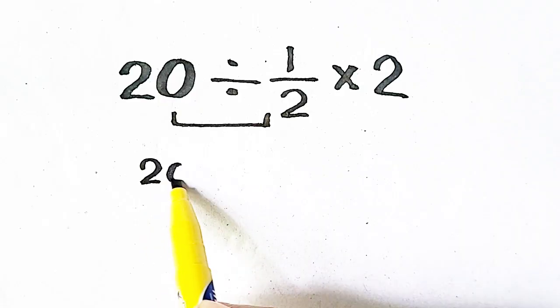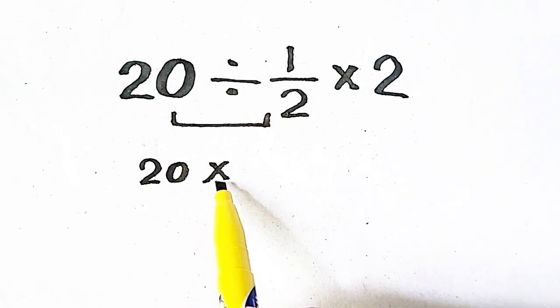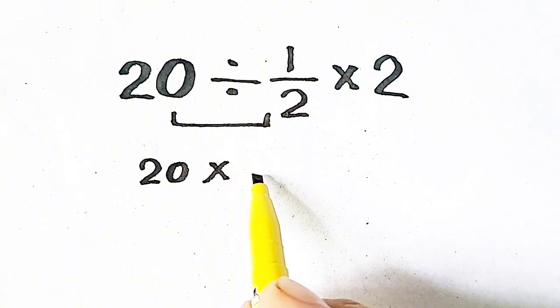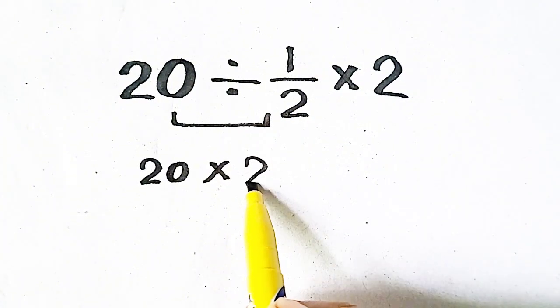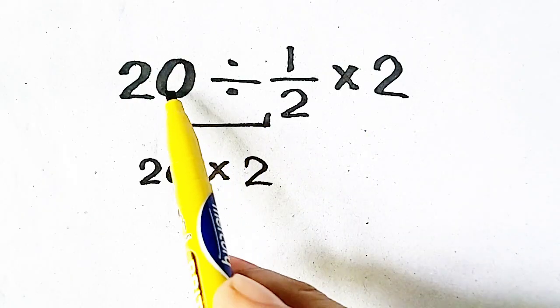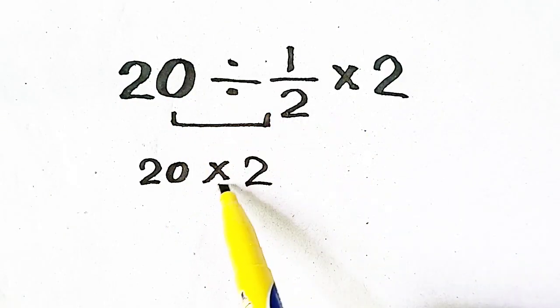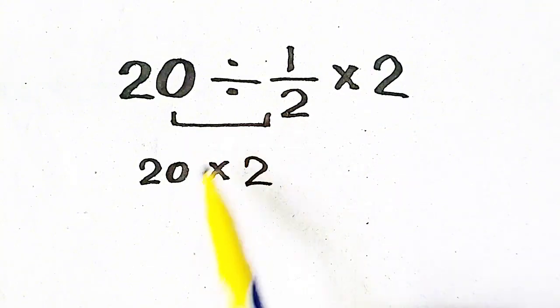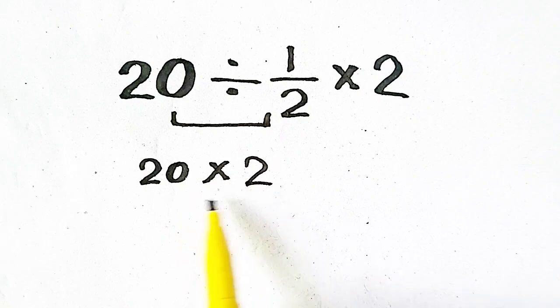So 20 times - division is changed into multiplication. And 1 by 2, we take its reciprocal. So it will become 2. It is called basically KCF rule. Keep it, change it, and 1 by 2 is flipped. So it is called KCF rule.